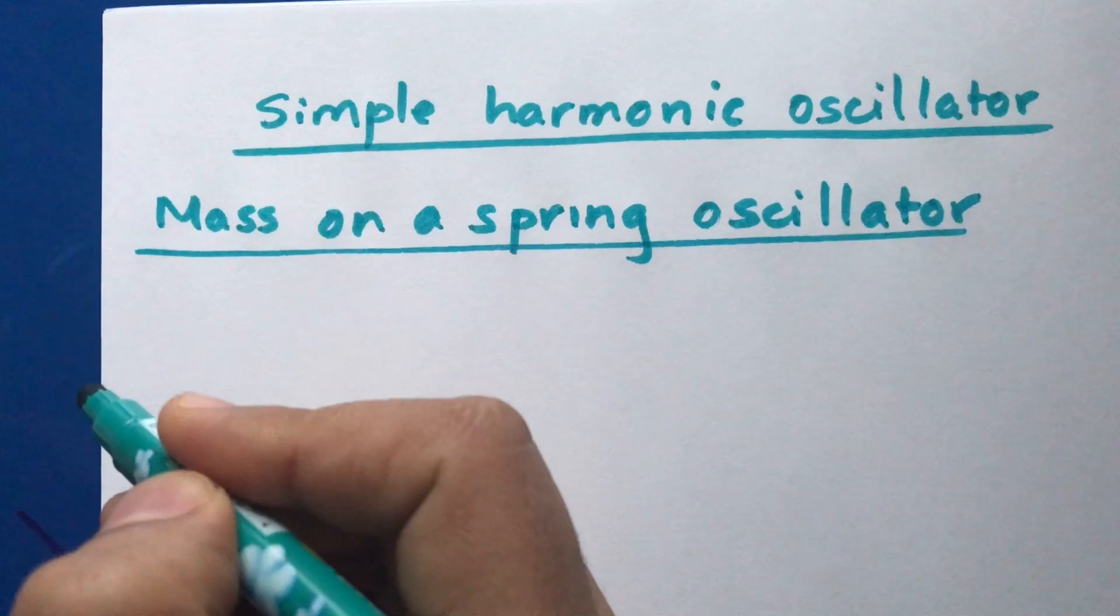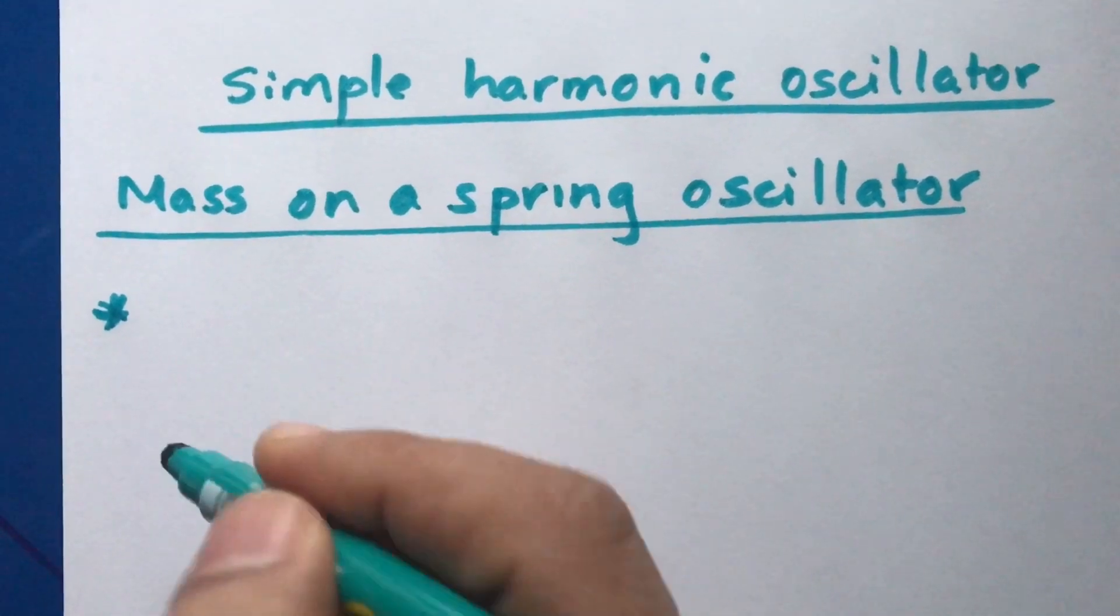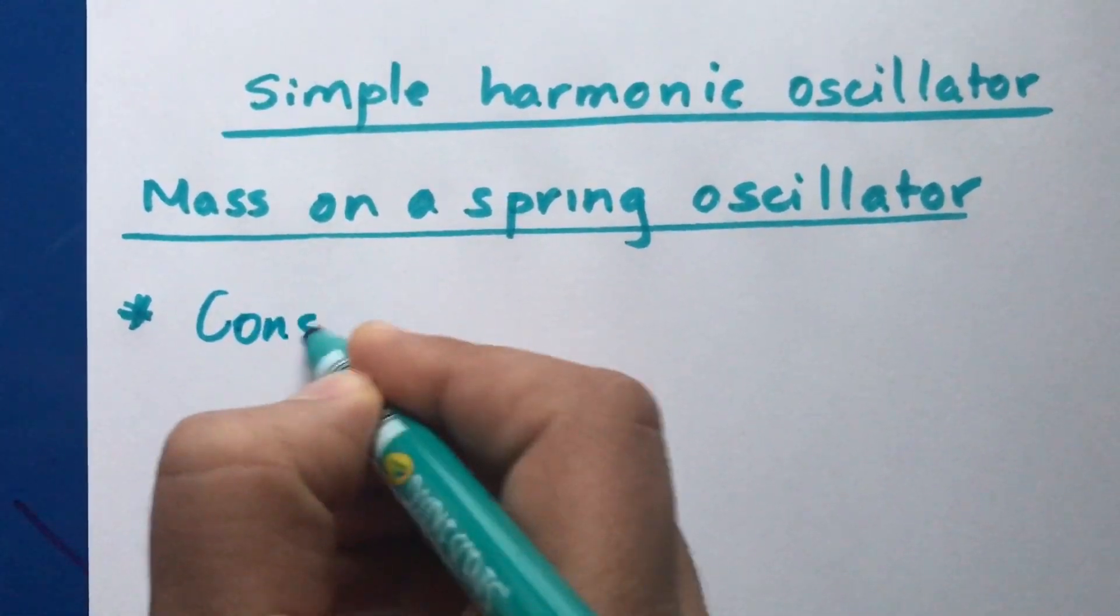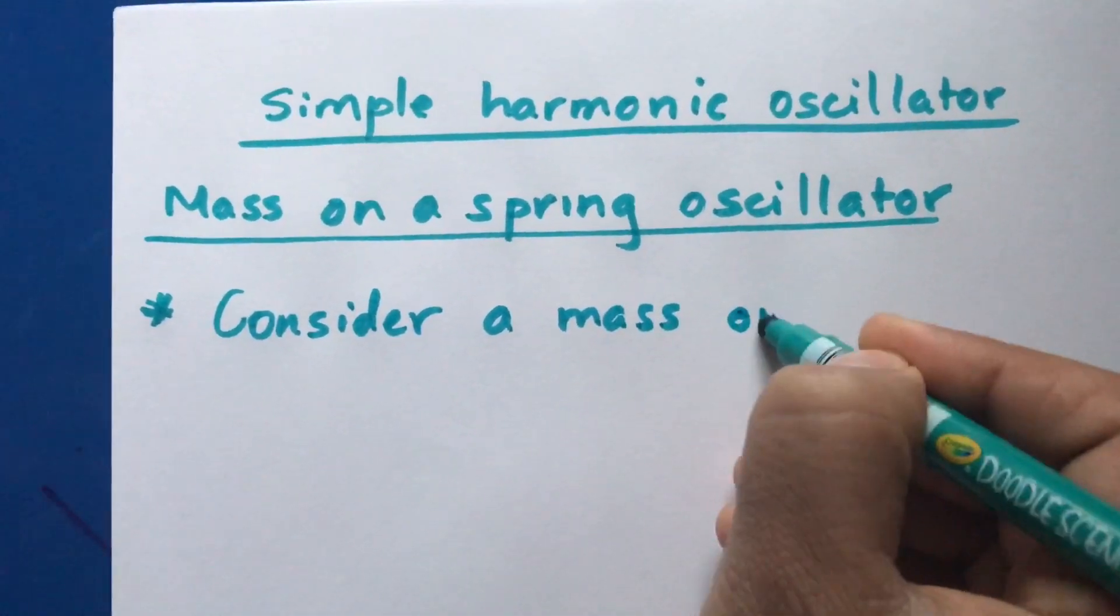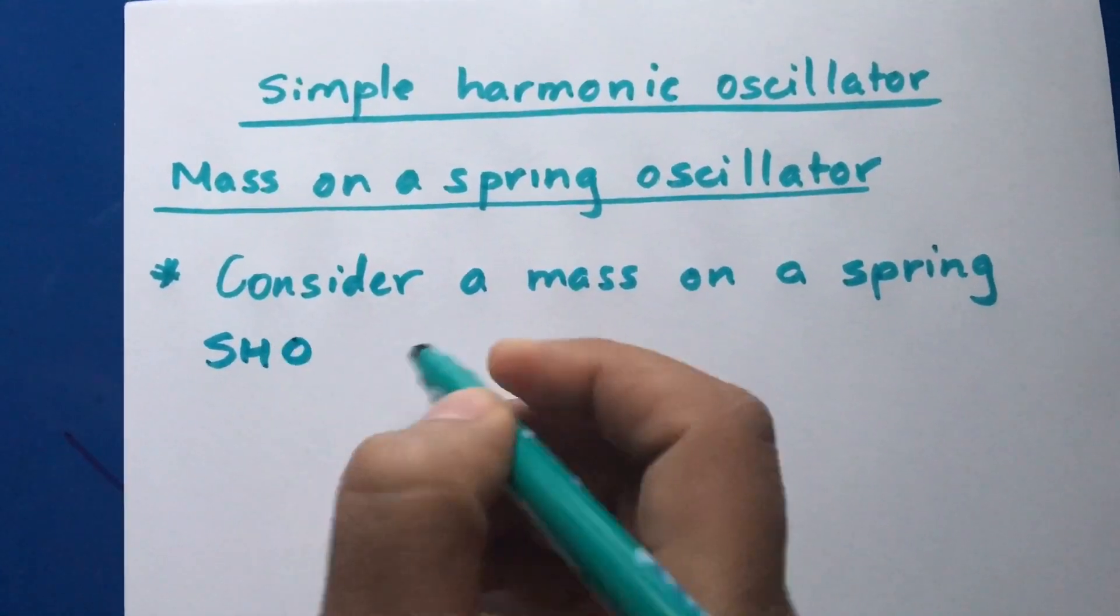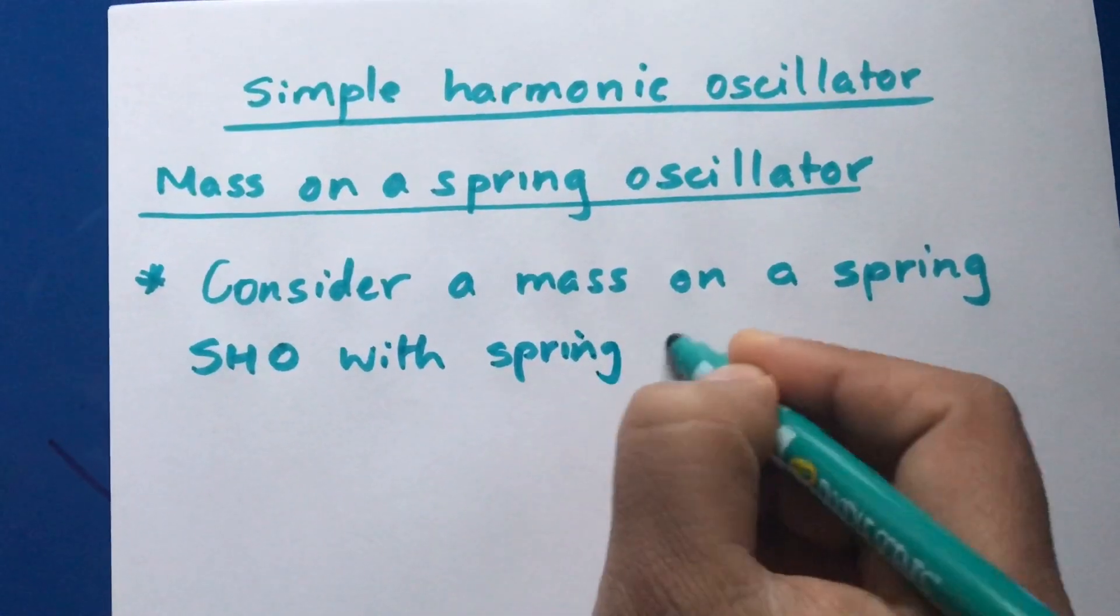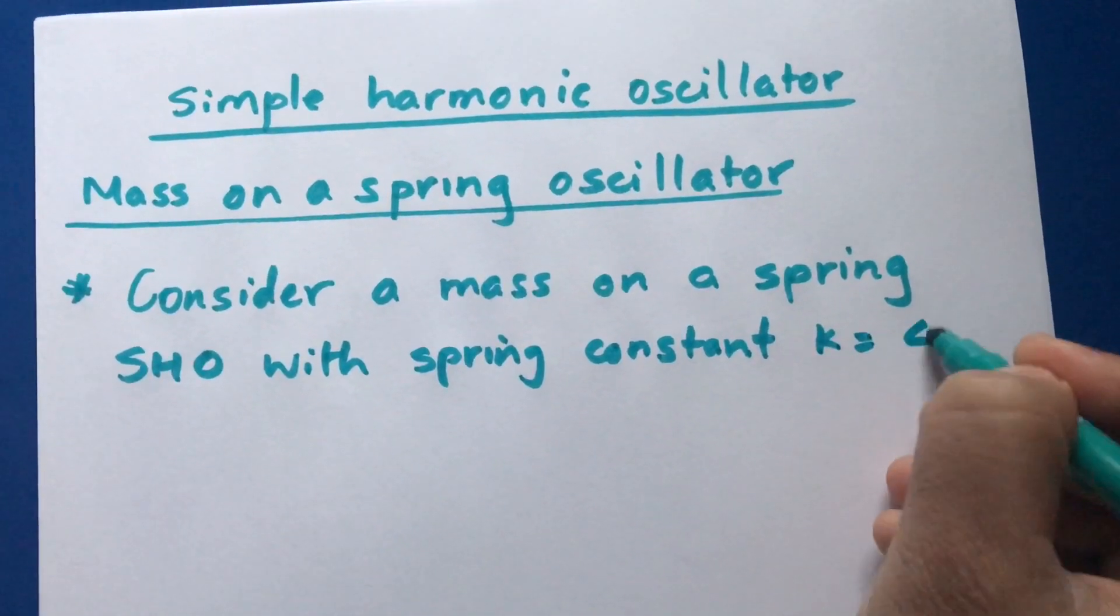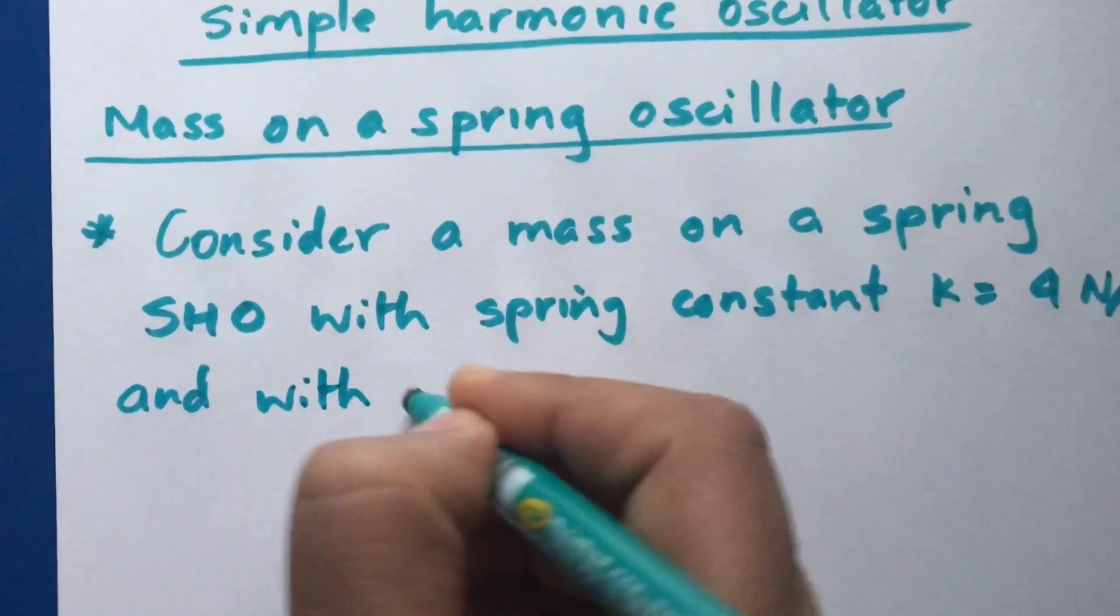I'll just take a simple problem regarding this and try to solve it so you will get some insight. The problem reads: Consider a mass on a spring simple harmonic oscillator with spring constant K equals 4 Newtons per meter and with mass 16 kilograms on it.